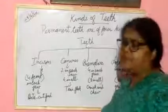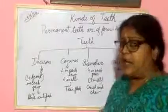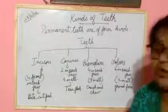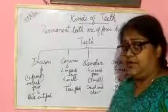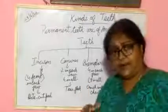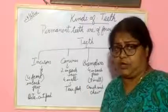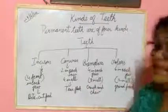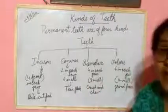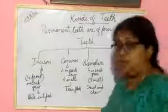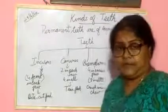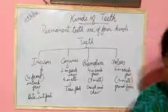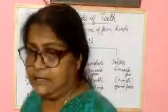Next one is premolar. How many premolar? Altogether, eight. Four in upper and four in lower jaw. And it is used to crush and chew the food. Clear, students?